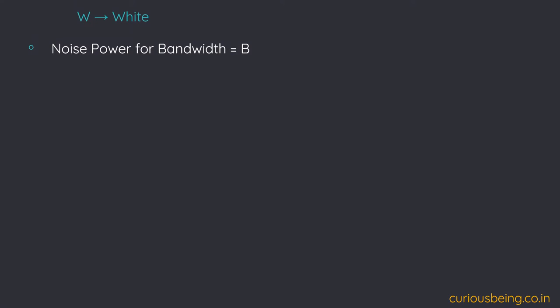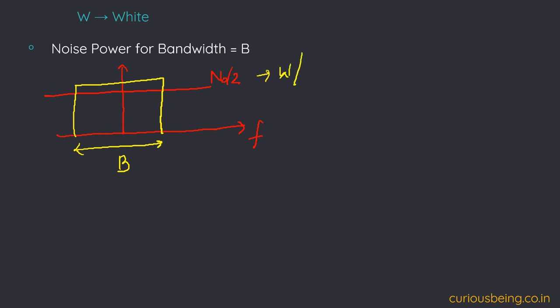If we have to calculate noise power for a particular bandwidth, given that the power spectral density is N₀/2 watts per hertz, and the bandwidth is B, then the noise power P_n is simply the power spectral density multiplied by the bandwidth. Very simple to calculate.